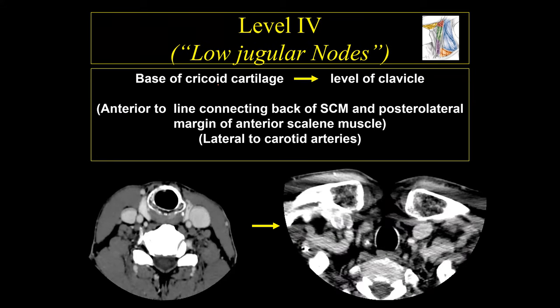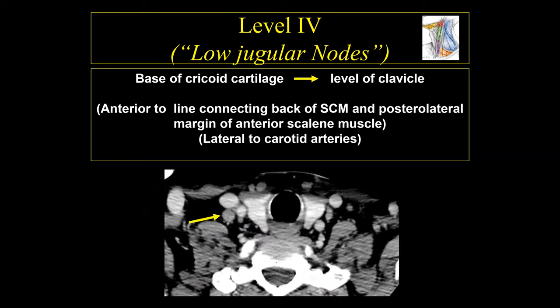The level 4 lymph nodes run from the base of the cricoid cartilage down to the level of the clavicle. Technically, they run from the sternocleidomastoid muscle anteriorly to the anterior scalene muscle. If you remember there is a line connecting the back of the sternocleidomastoid muscle, you'll be able to identify exactly where those level 4 lymph nodes are located — below the base of the cricoid cartilage.